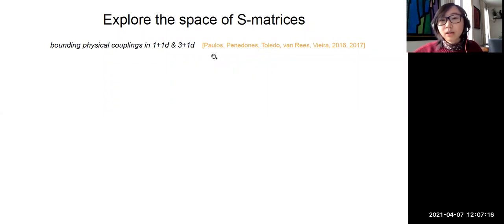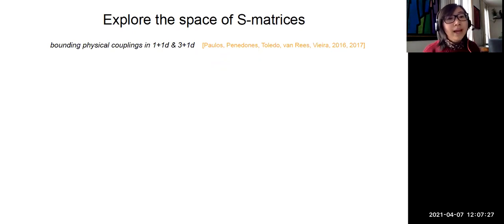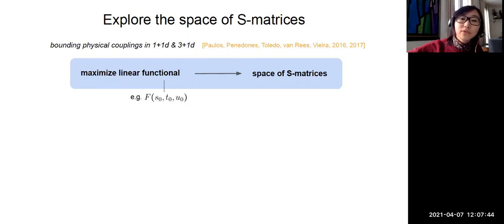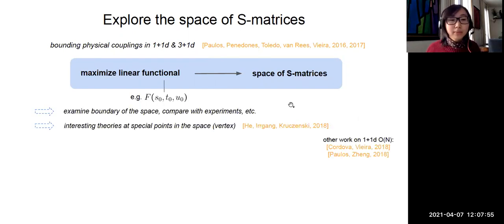The modern approach started with pioneer papers from Miguel, Drawn, John, Toledo, Bolt, and Pedro, where they constructed an S-matrix consistent with all these constraints and studied the problem of putting bounds on physical couplings in one plus one and three plus one dimensions. More generally, this is a way to map out the space of S-matrices by maximizing some linear functional — for instance, the amplitude evaluated at some kinematic point (s₀, t₀, u₀). Once we do this, we can examine the boundary of the space of consistent S-matrices and ideally compare with experiments.